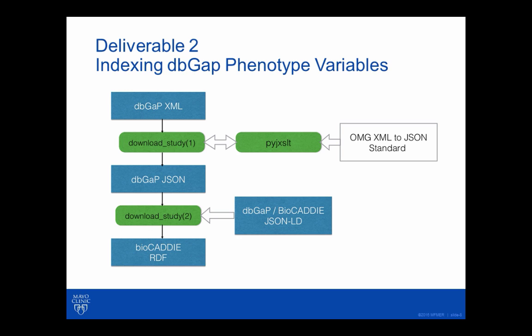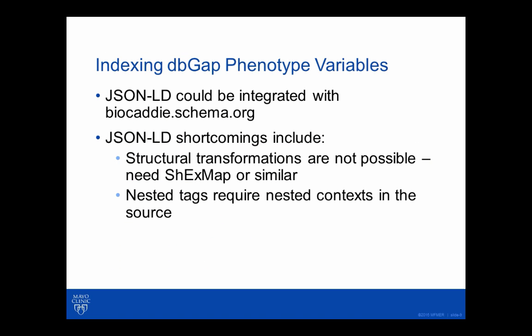We learned about both what you can and can't do with JSON-LD. While we could do a lot of the conversions from dbGaP into BioCADDI using JSON-LD, there were structural places where you can't do major structural transformations. The other problem is an assumption that tags are pretty much universal, so when you have tags inside tags that mean different things in different contexts, it becomes very problematic.